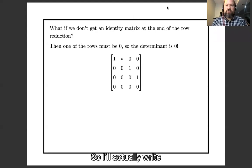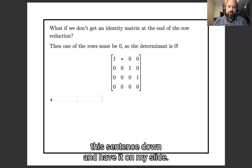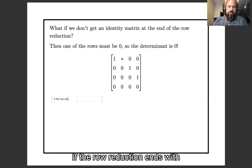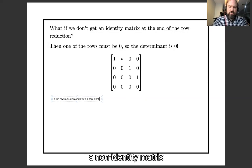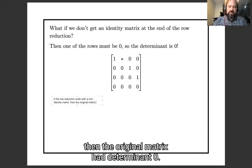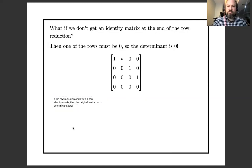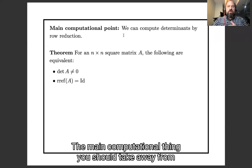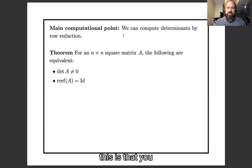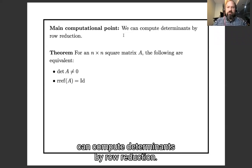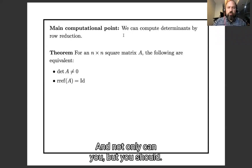So, oh, let me actually write the sentence down, I don't have it on my slide. If the row reduction ends with a non-identity matrix, then the original matrix had determinant 0. So, okay, the main computational thing you should take away from this is that you can compute determinants by row reduction. And not only can you, but you should.